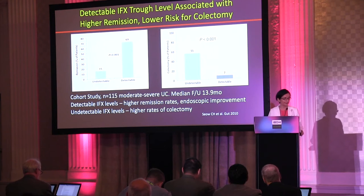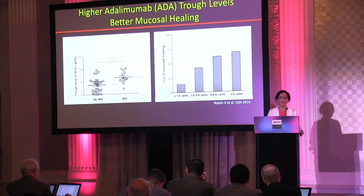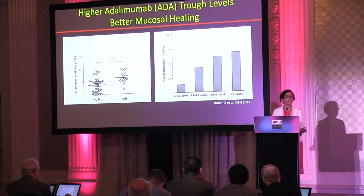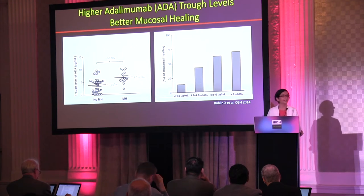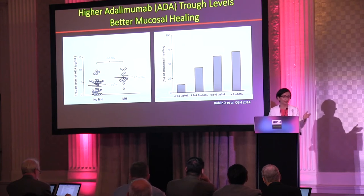Aside from improved clinical remission with higher trough levels, we've also seen a lower risk for colectomy. There is a much lower risk for colectomy with detectable trough levels, as opposed to higher rates with undetectable levels. I showed you the data for infliximab, but the same goes for adalimumab — and in fact, for adalimumab, our trough levels may need to be aimed even a little bit higher. The prior slides showed a trough concentration around three to five for infliximab, but for adalimumab, achieving a higher trough level was associated with better mucosal healing — perhaps we should aim for seven or eight as our goal trough concentration for adalimumab.